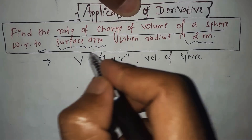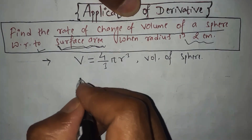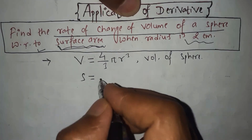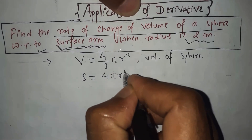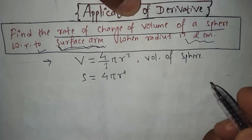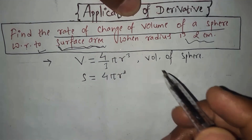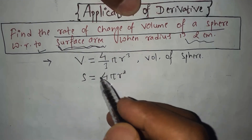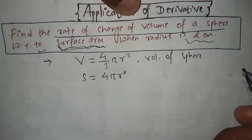Next, the surface area of the sphere — let's represent it by S. The surface area is S = 4πr², where r represents the radius. So, V = (4/3)πr³ and S = 4πr² are the formulas for volume and surface area of the sphere respectively.